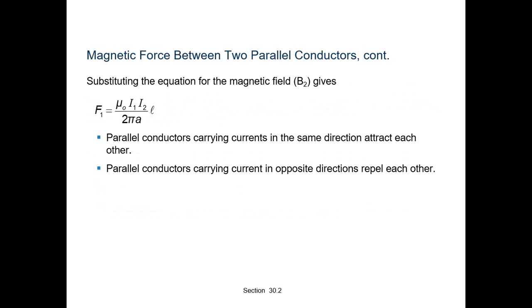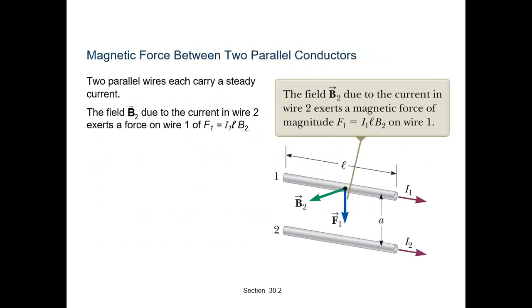The magnetic force between two parallel conductors — two parallel wires each carrying steady currents I1 and I2. There are both magnetic and electric forces present. The field B2 due to the current in wire 2 exerts a magnetic force of magnitude F1 = I1·L·B2 on wire 1.